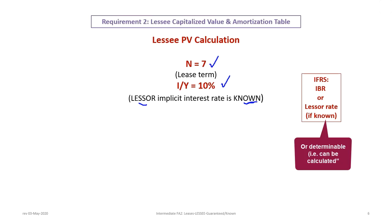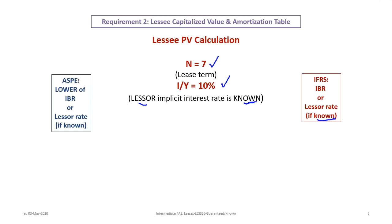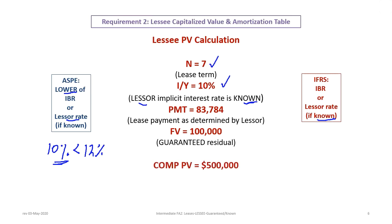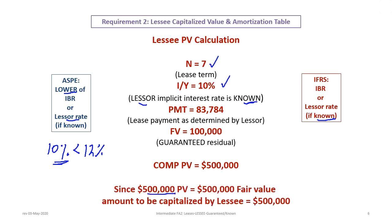Under IFRS, you should never have a situation where the lessor's implicit rate is not known, because you can calculate it. Under IFRS, we always use the implicit rate. Under ASPE, we use the lower of the IBR or the lessor rate if known. We know both — 10% is less than the 12% IBR, so we use 10%. The payment is $83,784 and the guaranteed residual of $100,000 is entered as FV. Computing the PV gives $500,000, which equals the asset's fair value, so the lessee capitalizes $500,000.